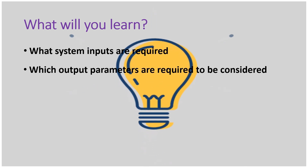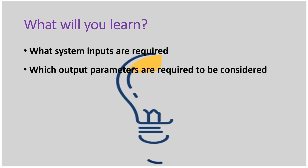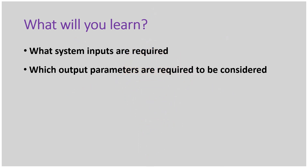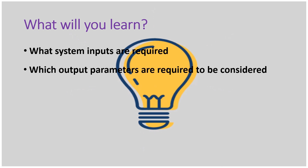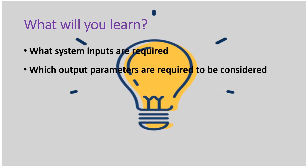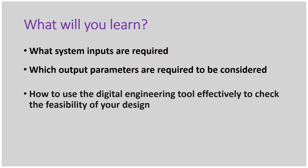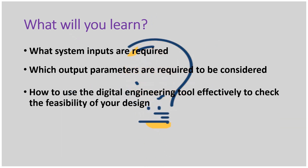The second part is what output parameters need to be considered. For our example of pushing a 10 kg load, which cylinder will you pick and what will its bore size be? The bore size is the output parameter. This digital tool will help you decide which bore size to select and will provide output calculations to compare with your input parameters, so you can verify whether your selection is safe and proper.